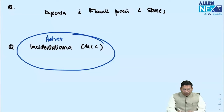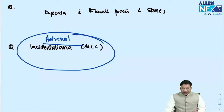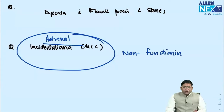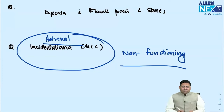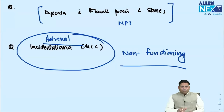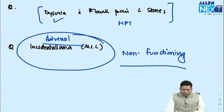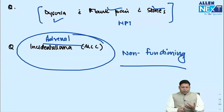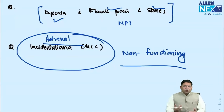Adrenal incidentaloma question: most common type or cause. Most adrenal incidentalomas are non-functioning in nature. Then a question on hyperparathyroidism presenting with dysuria, flank pain, and stone — polyuria, polydipsia, and flank pain from a stone are classical features of hyperparathyroidism. Also a gallbladder ultrasound image showing Phrygian cap was discussed.